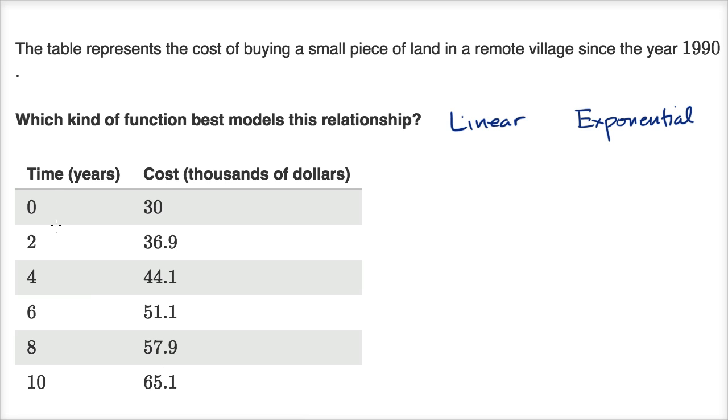Alright, so now let's think about this together. As the time goes by, the time variable right over here, we see that we keep incrementing it by two. Go from zero to two, two to four, four to six, so on and so forth. It keeps going up by two.